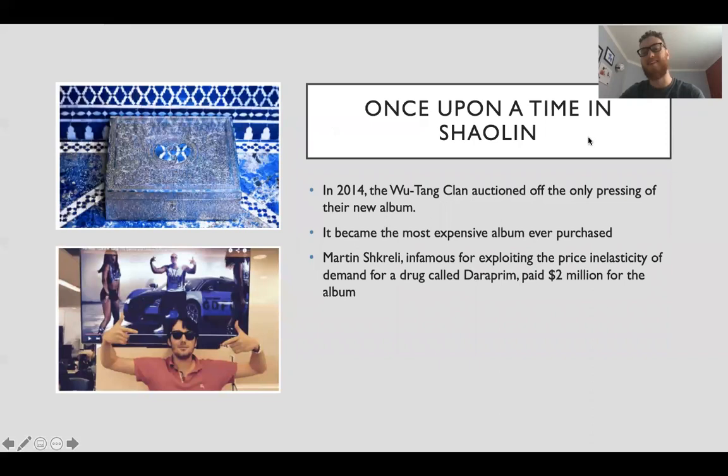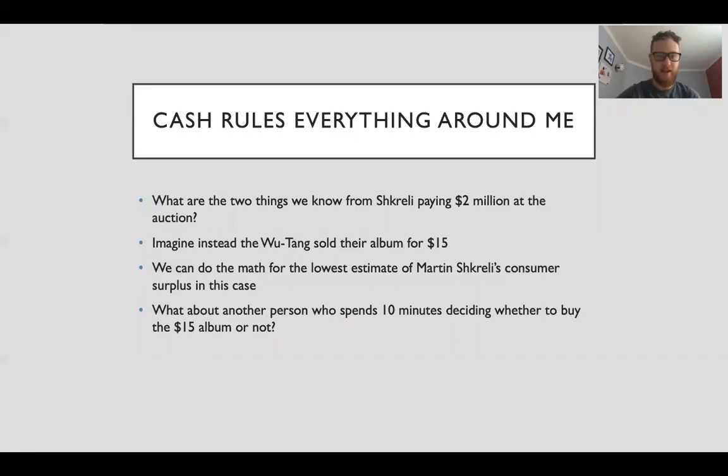Once upon a time in Shaolin, in 2014 the Wu-Tang Clan auctioned off the only pressing of their new album. It became the most expensive album ever purchased. Martin Shkreli, infamous for exploiting the price inelasticity of demand for a drug called Daraprim, paid two million dollars for the album. Cash rules everything around me. What are the two things we know from Martin Shkreli paying two million at the auction?